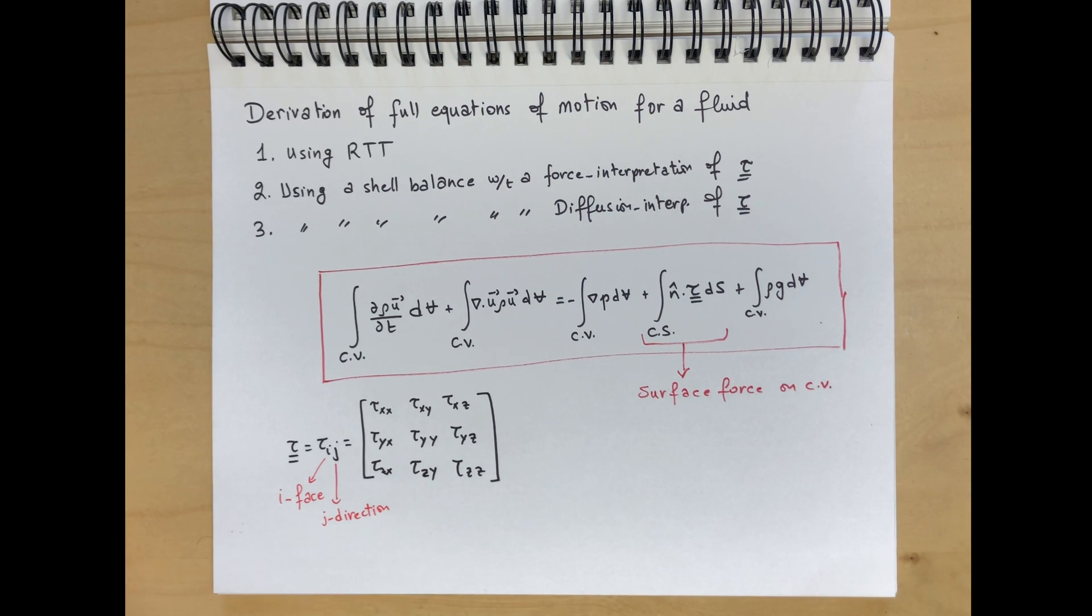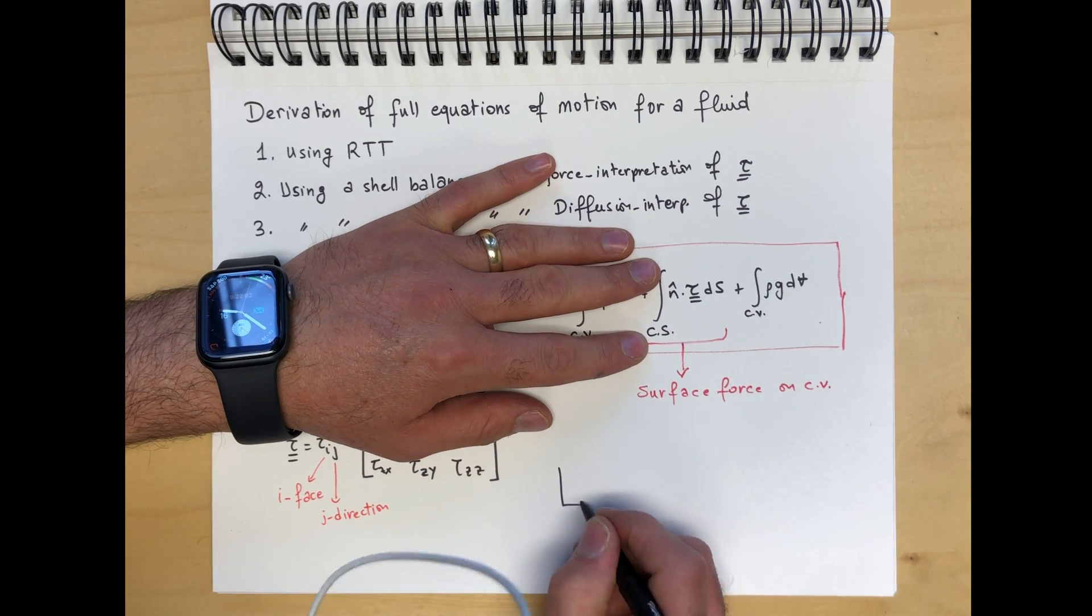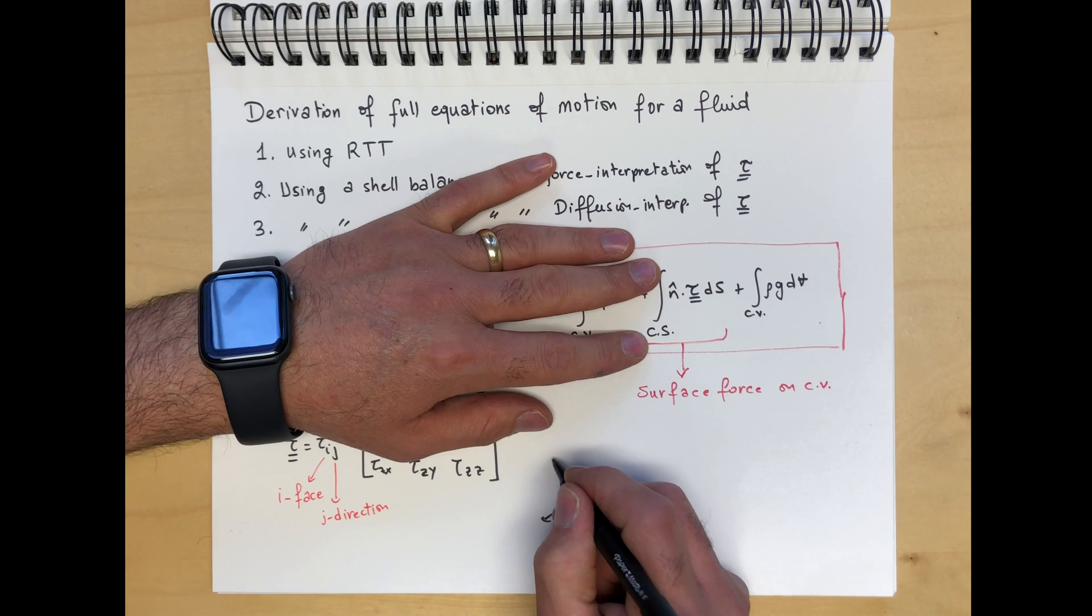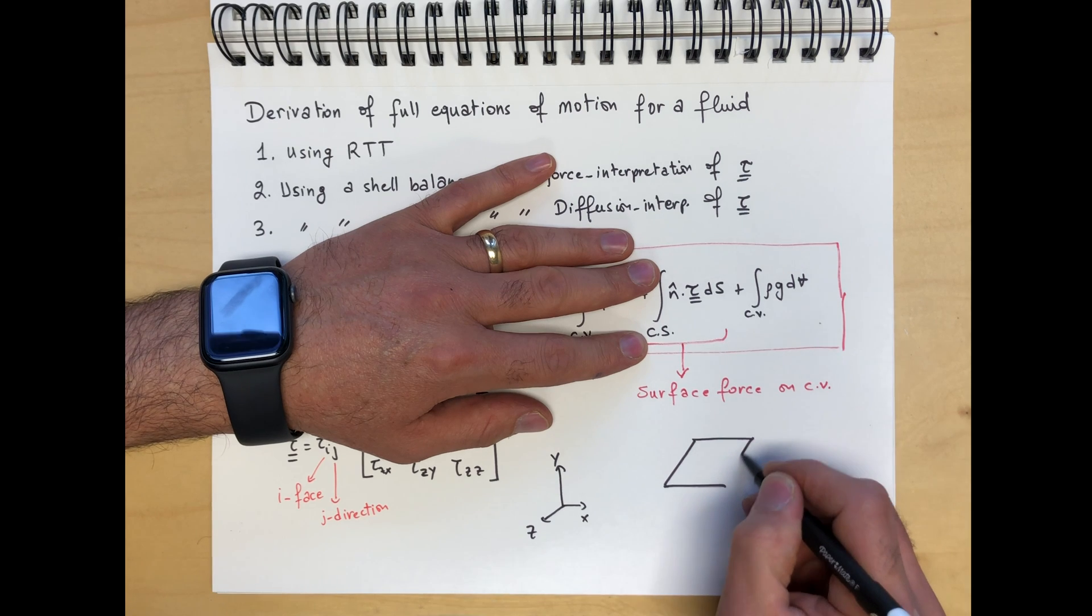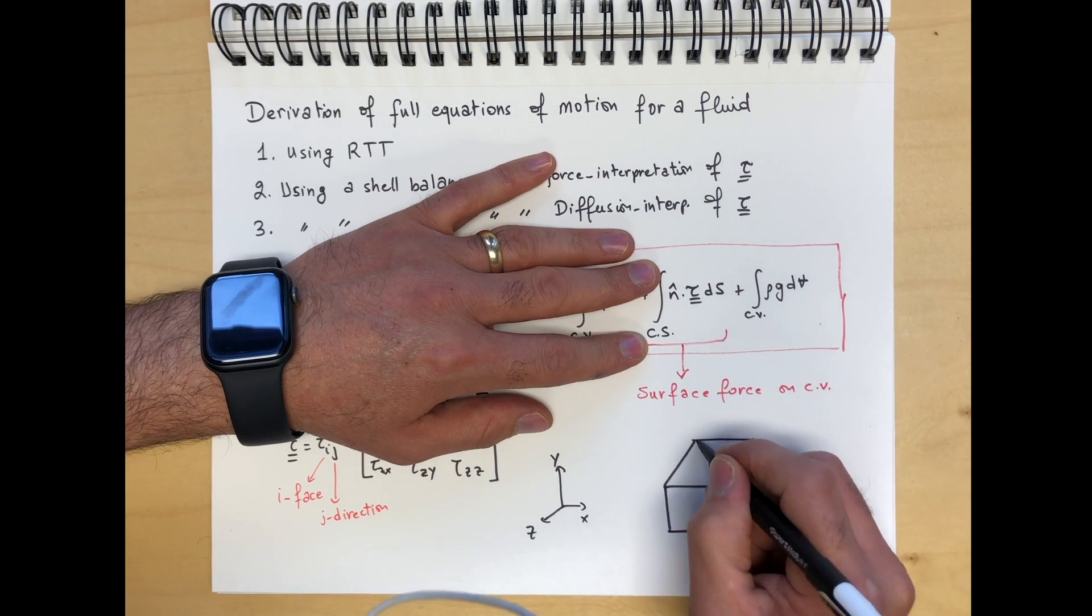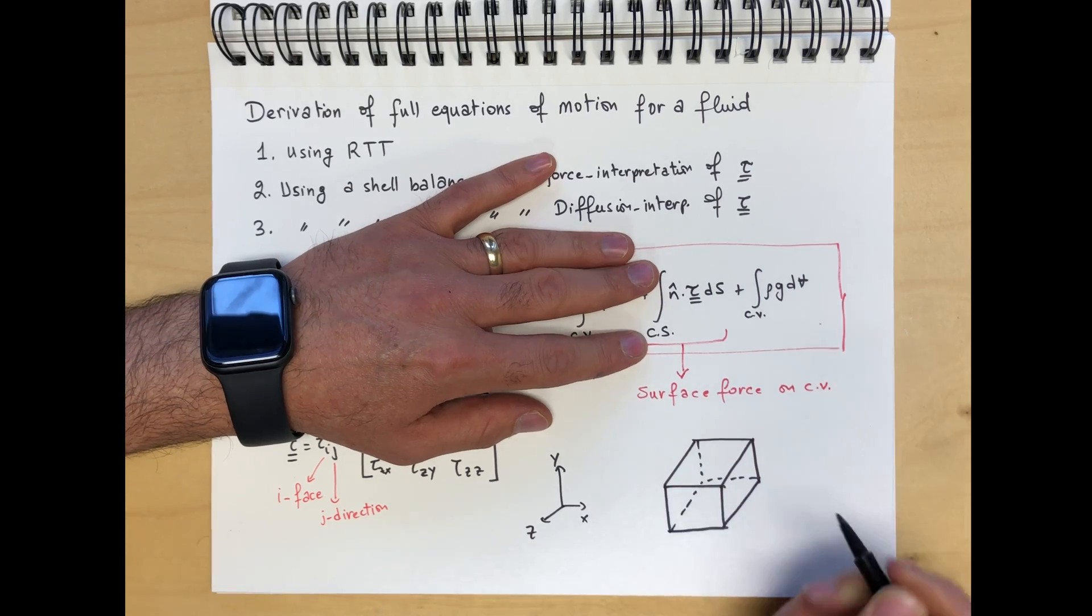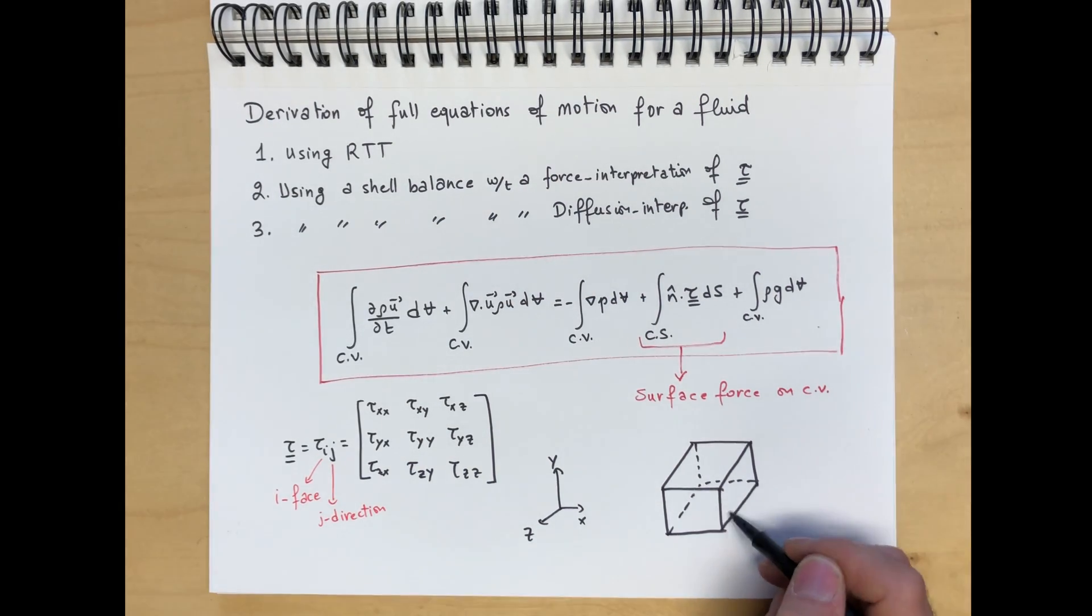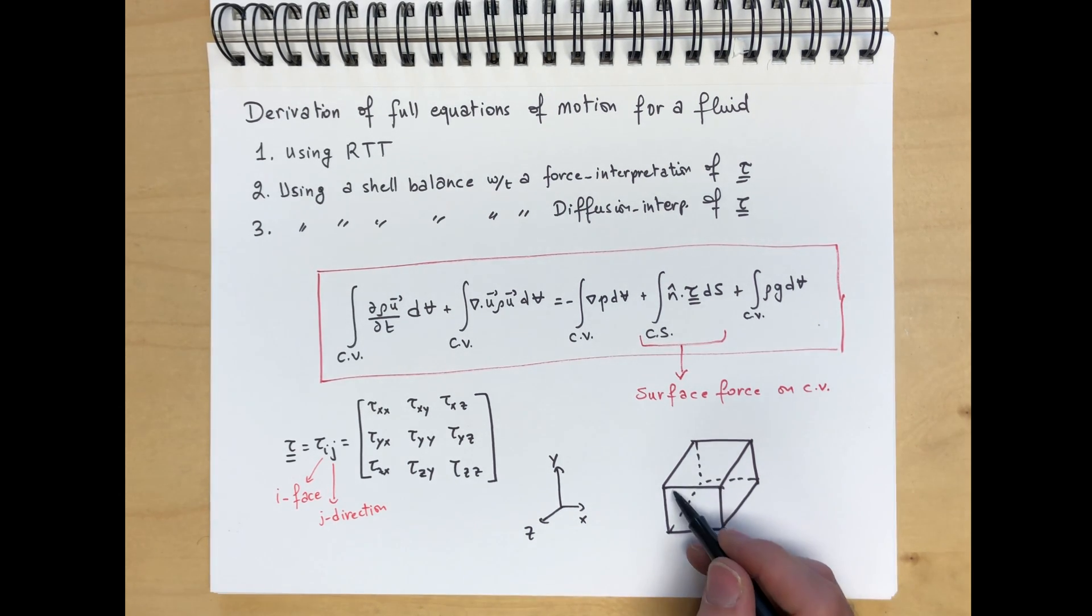What's an x-face? It's a face perpendicular to the x-axis. What's a y-face? It's a face perpendicular to the y-axis. What's a z-face? It's a face perpendicular to the z-axis. So, if we write our coordinate system like this, x, y, and z, and you have your usual element. This would be an x-face, this would be a y-face, and this would be a z-face.